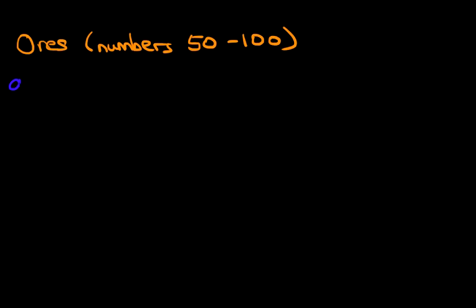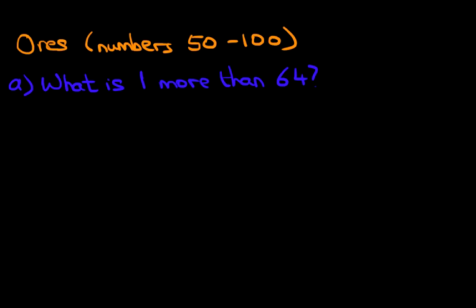So let's have a look at our first question: what is one more than 64? We're going to do this using the counting method. What number are we looking at? We're looking at number 64. Now, are we going to count forwards or backwards? The question says more than, so therefore we are going forwards. How much are we going forwards by? We're going forwards by 1.